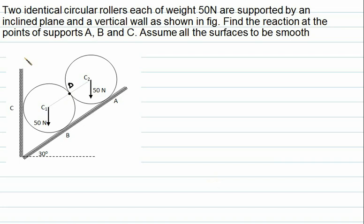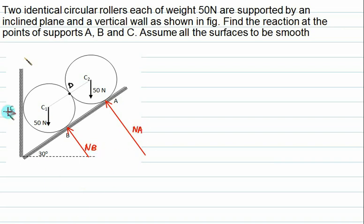Each reaction is perpendicular to the surface it acts on. Let's call the reactions Nb, Na, and Nc. These are contact reactions. The angle here is 90°, so this angle equals 60°, and this angle is also 90°, making this angle 60°.